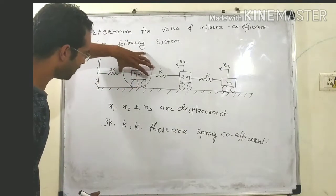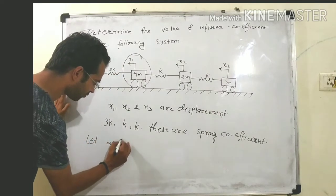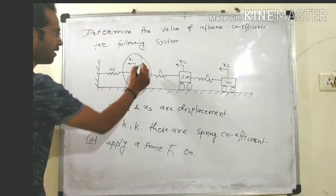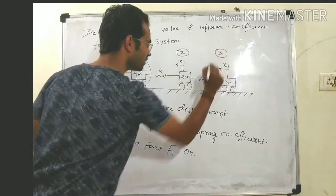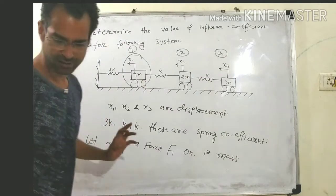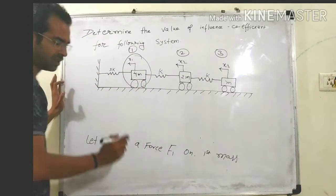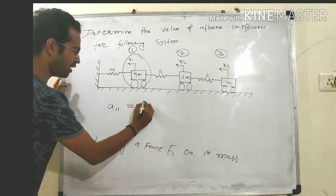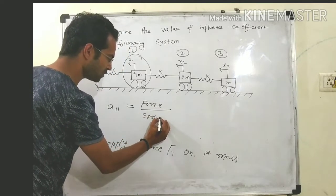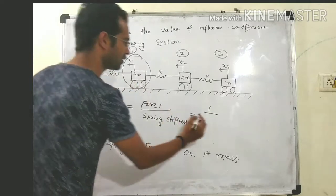To find the value of the influence coefficient for mass 4M, we will apply a force F1 on the first mass. It is the first mass, second mass, and third mass. We apply unit force on the first mass. We know that it will give A11. A11 equals force divided by spring coefficient — spring stiffness. Its value will be 1 upon 3K.